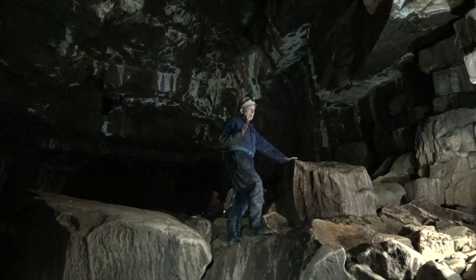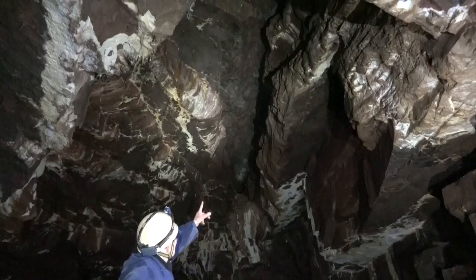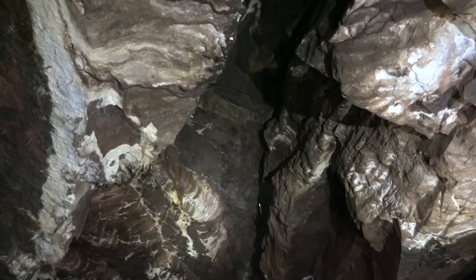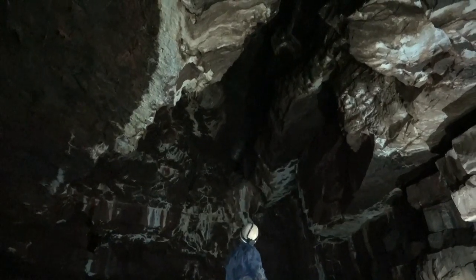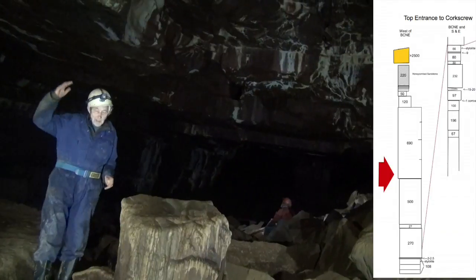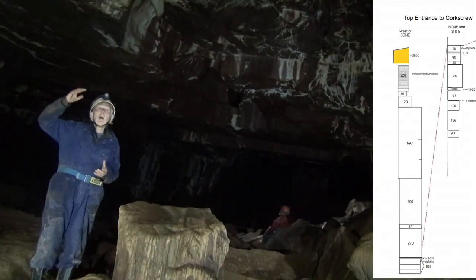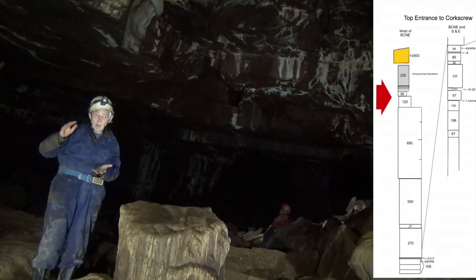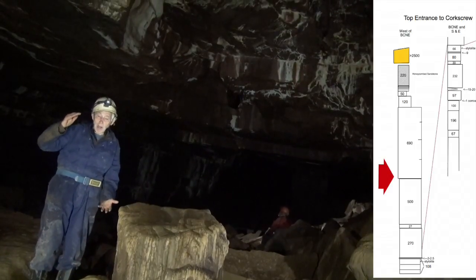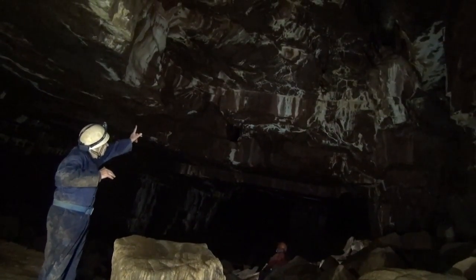We are now in the big chamber near the entrance. This is characterized by a domed arched roof which extends upwards into and through some rather massive limestone beds. Coming down from our previous chamber we passed through some well-bedded limestones and then massive limestones seven and three meters thick, and these occur up in the roof here.